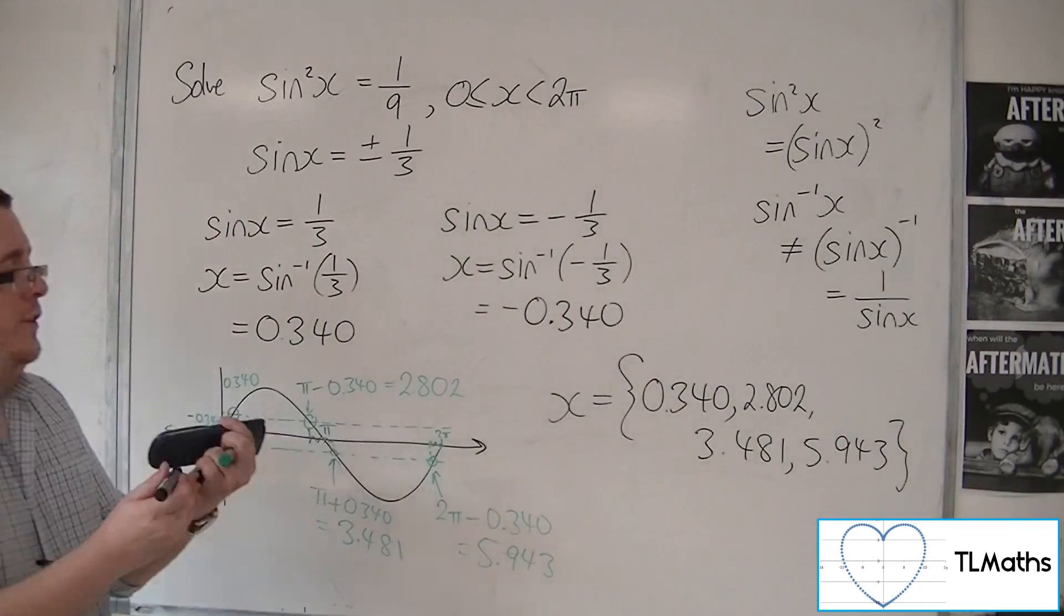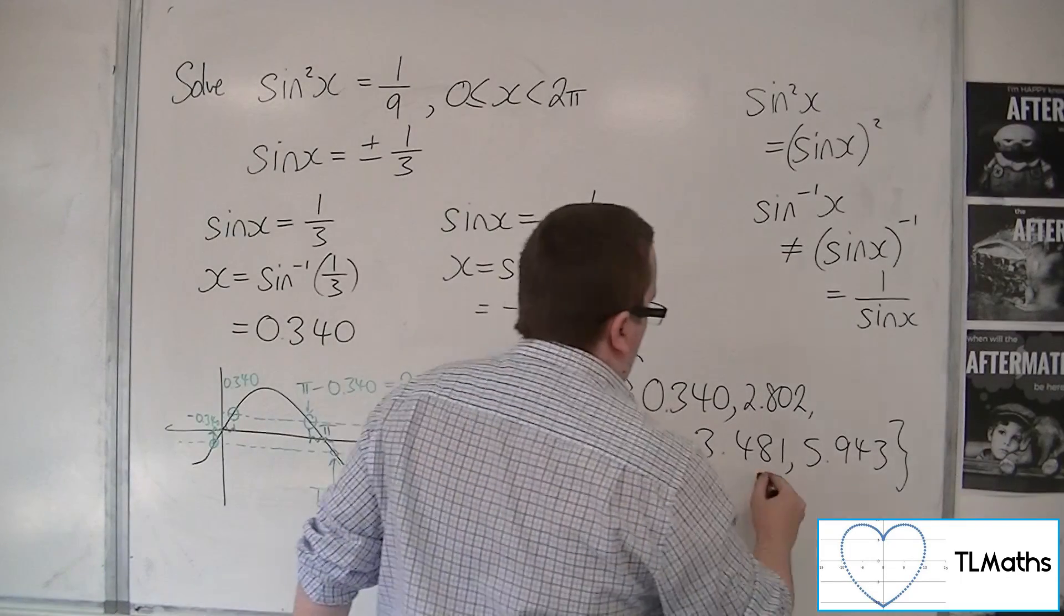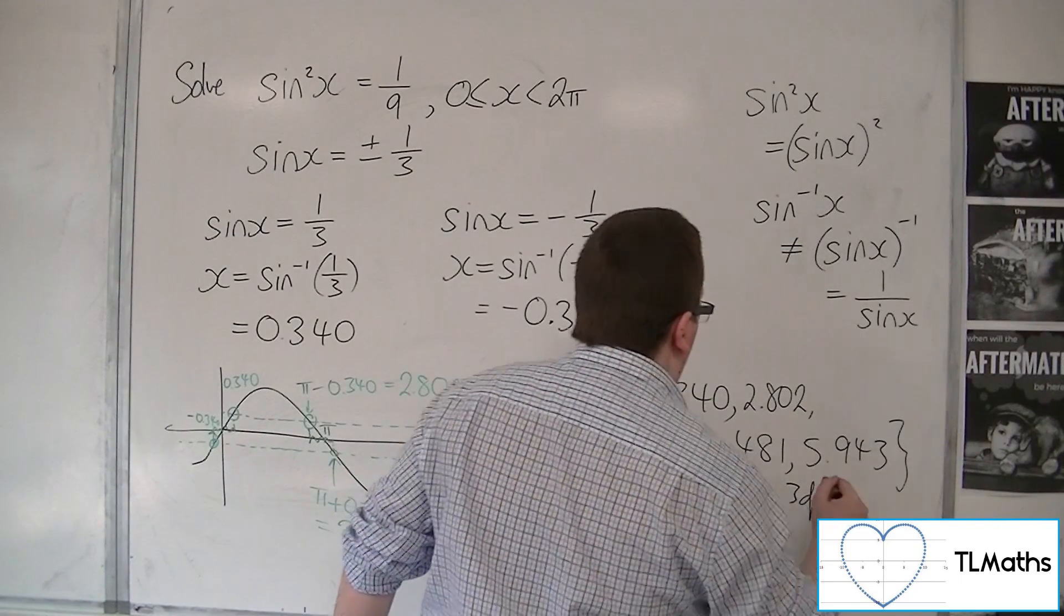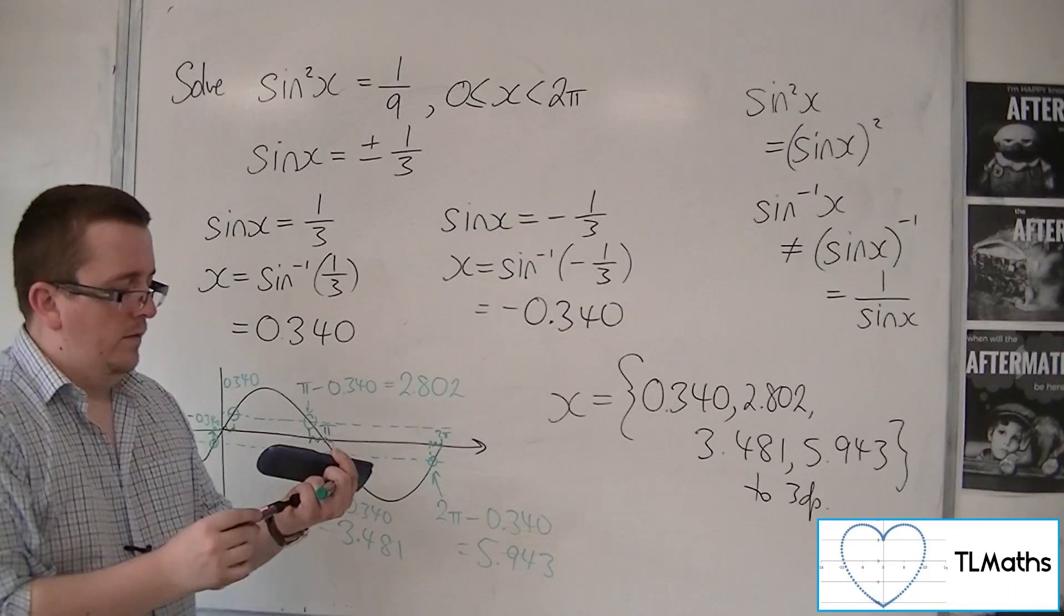And they are the 4 solutions to 3 decimal places that solve the original problem.